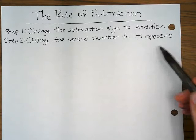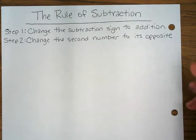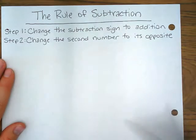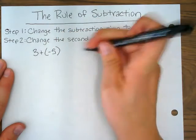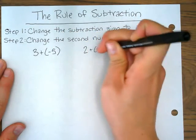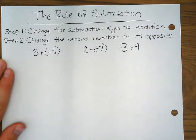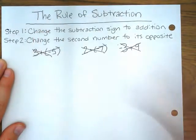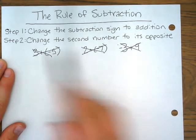If you remember, opposites are things like negative three is the opposite of positive three, or positive twelve is the opposite of negative twelve. We use the rule of subtraction only on subtraction problems. If you have problems such as three plus negative five, or two plus negative seven, or negative three plus nine, these are not problems that you will use the rule of subtraction for. The rule of subtraction is only for subtraction problems, not addition problems.